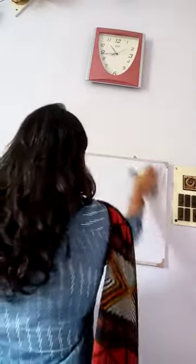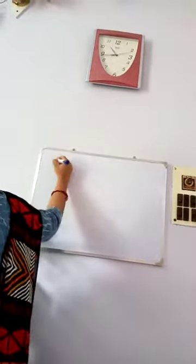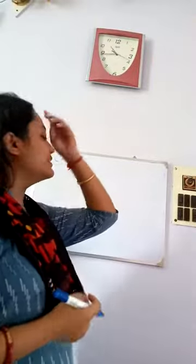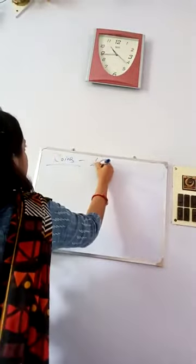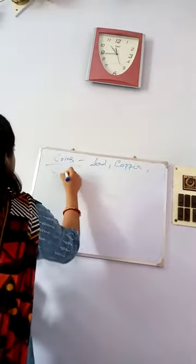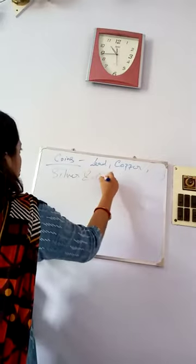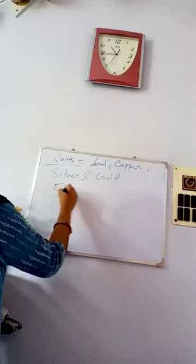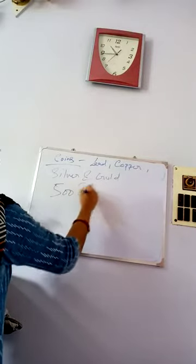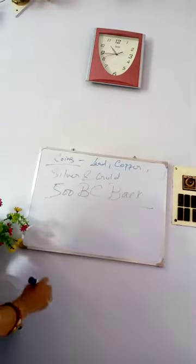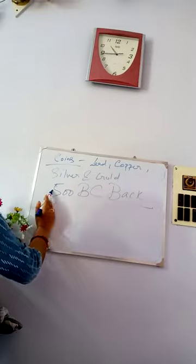Now we are going to study about coins. Coins, as we all know, are a medium of exchange and were used in different forms — lead, copper, silver, and gold. Ancient coins in India date back to 500 BC.